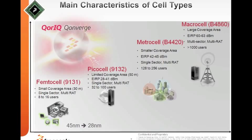The metro cell has about 100-meter coverage area, higher transmit power, supports multiple technologies including Wi-Fi, and is geared towards larger capacity like big offices — up to 256 users. The macro cell has a really large coverage area of a couple of square kilometers, EIRP of about 60 to 63 dBm, multiple sectors, multiple access technologies, and supports greater than 1,000 users.